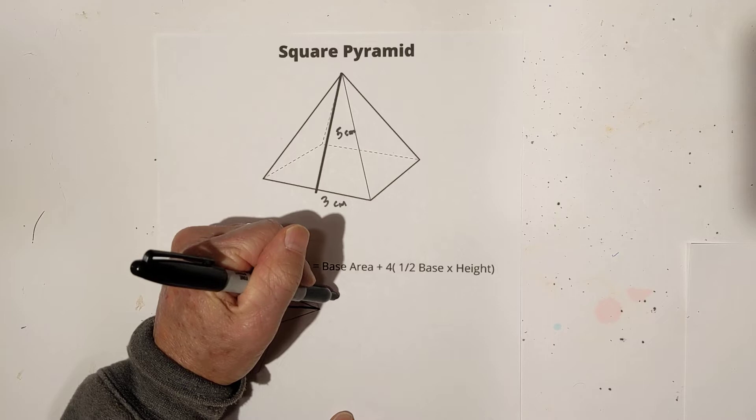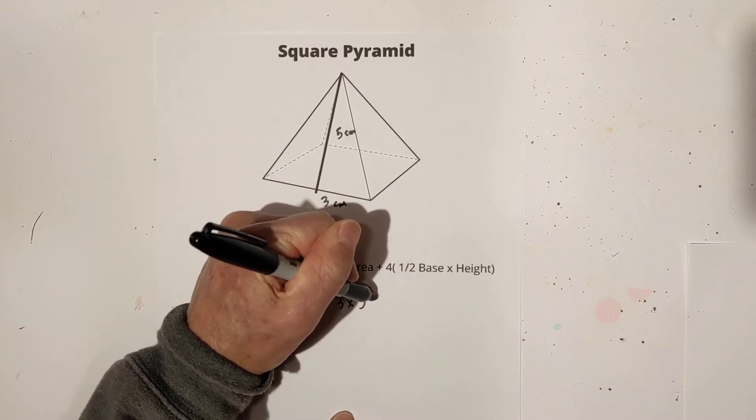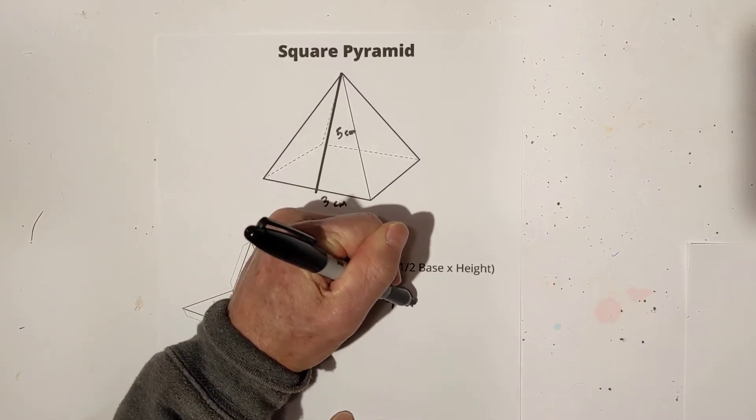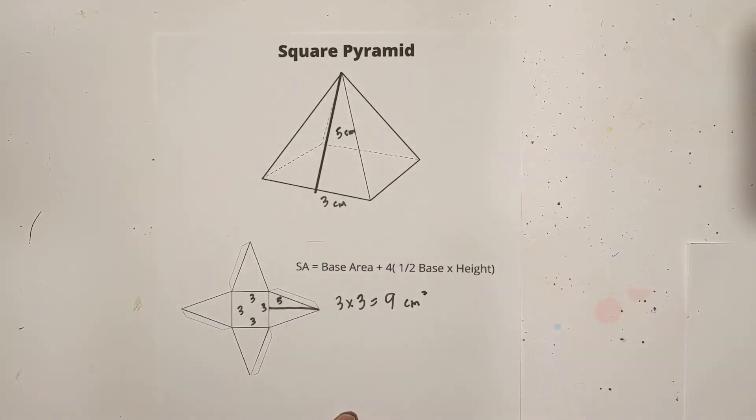Let's get started. First, the base area is three times three, and that equals nine. Remember, it's in centimeters, so that will be centimeters squared.